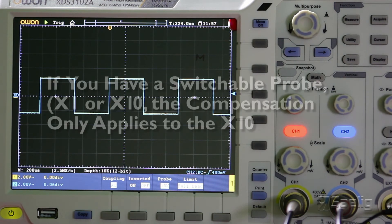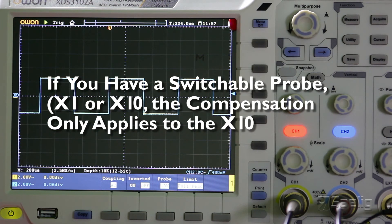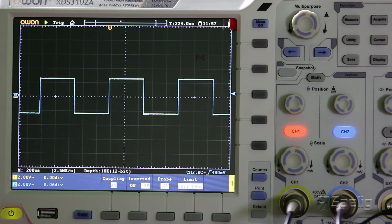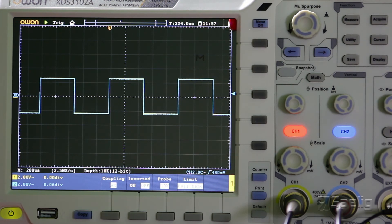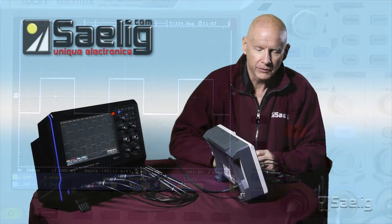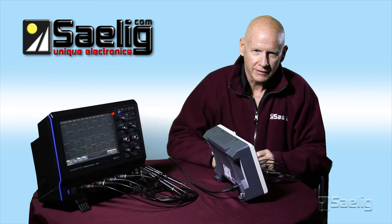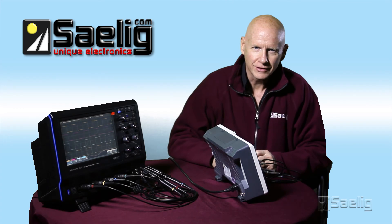If you have a switchable probe times one times ten type of probe, the compensation adjustment is applicable only to the times ten position. So just remember that. And if you're working with your probes in times ten, it's important to have the compensation adjusted right because otherwise, obviously, the measurements that you make will be distorted if the probe isn't compensated. So that's it for that particular adjustment. It's very important, but it's easy to do. Thanks for watching.